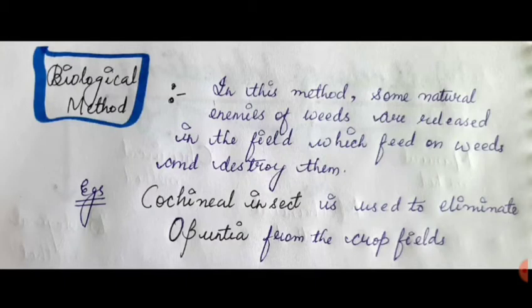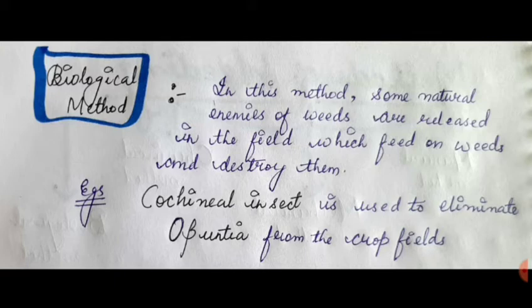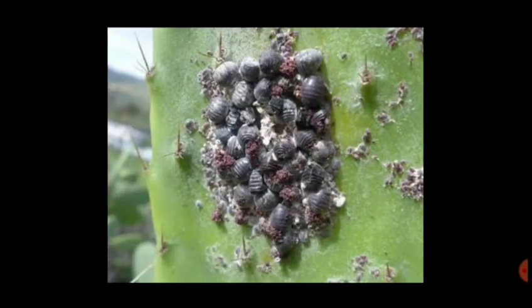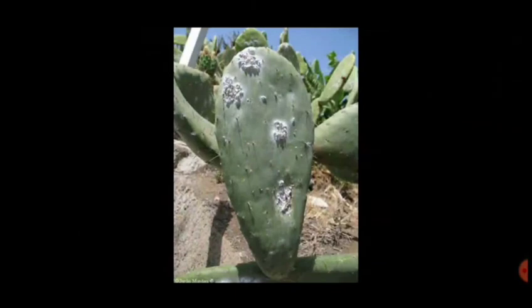In the biological method, some natural enemies of weeds are released in the field which feed on the weeds and ultimately destroy them. For example, the cochineal insect is used to eliminate Opuntia (cactus) from crop fields. This is practiced in Tamil Nadu, where farmers put cochineal insects in their fields to remove Opuntia. You can see in the diagram how the cochineal insect grows on the Opuntia and kills it.